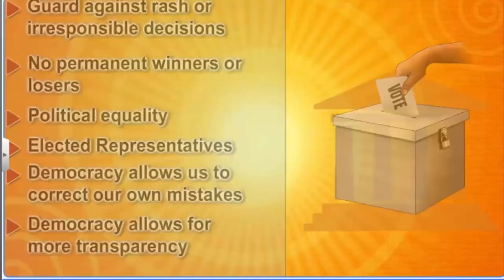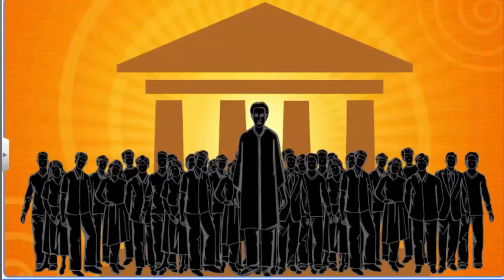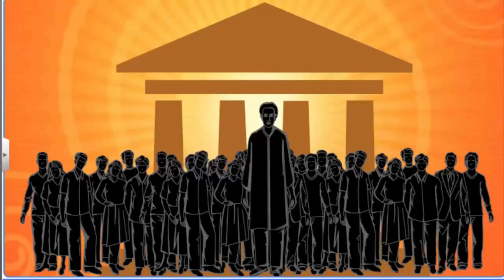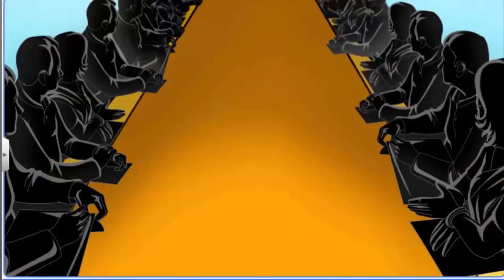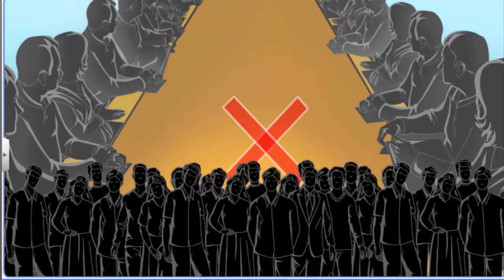Ours is a representative democracy — people rule through their elected representatives. The limitations of representative democracy are: firstly, it is not physically possible for all citizens to sit together and make collective decisions; and secondly, all citizens may not have the time, skill, or inclination to take part in the decision-making process.